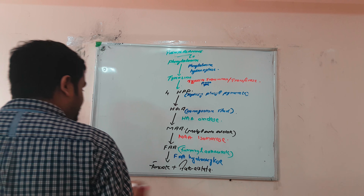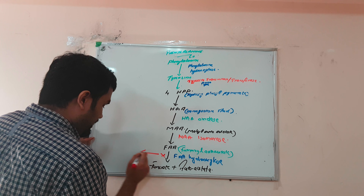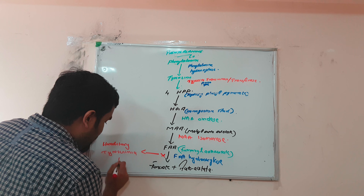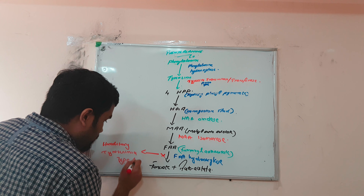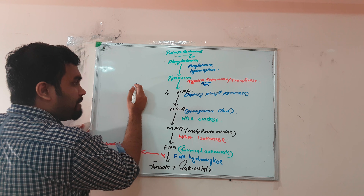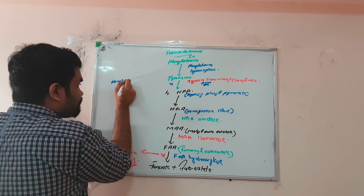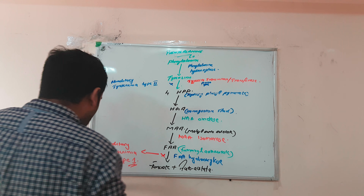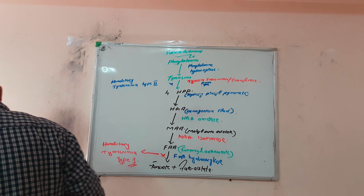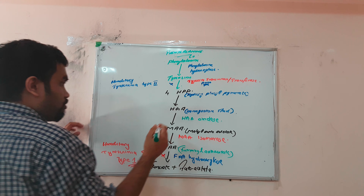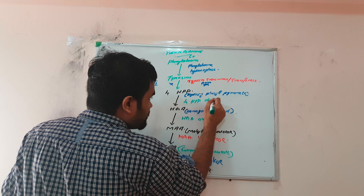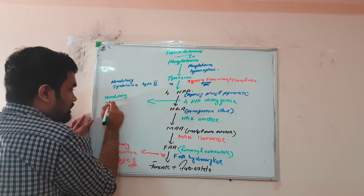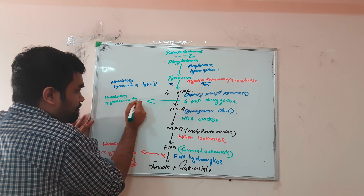There are some diseases related to this pathway. If FAA hydroxylase is absent, it causes hereditary tyrosinemia type 1. Tyrosine aminotransferase deficiency causes hereditary tyrosinemia type 2. And 4-HPP dioxygenase deficiency causes hereditary tyrosinemia type 3. All three types are important to remember.